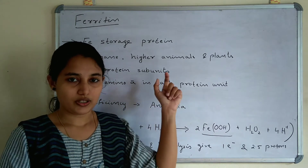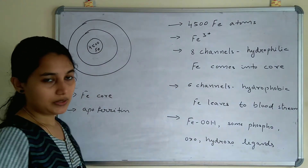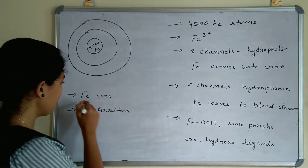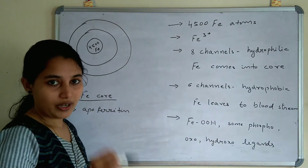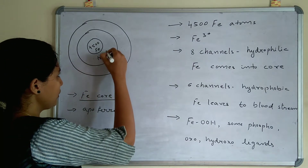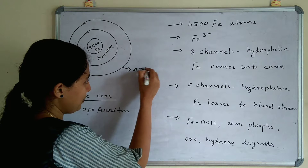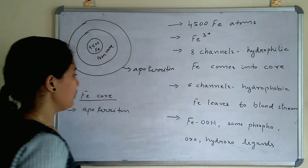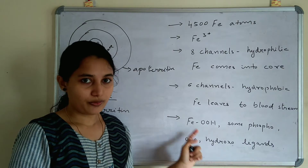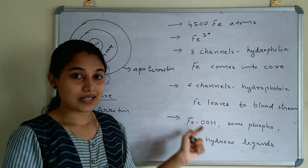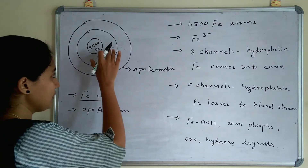Now let us see the detailed structure of ferritin. The structure shows an iron core (Fe core) containing 4,500 iron atoms. The external ring surrounding the iron core is called apoferritin. The iron present in ferritin is in the form of FeOOH, which is in the plus 3 oxidation state, and some phospho, oxo, and hydroxo ligands are also present in this iron core.